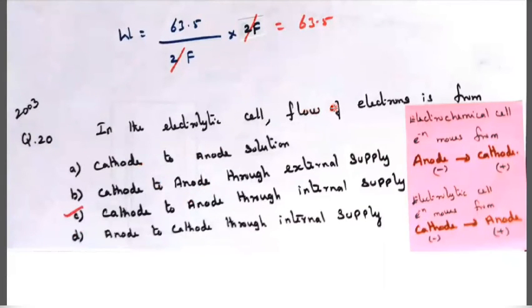2003 question 20. In the electrolytic cell, the flow of electrons is from cathode to anode or from cathode to anode solution - four different options given. Key points: electrochemical cell and electrolytic cell. In electrochemical cell, electron moves from anode to cathode - anode minus, cathode positive. But in electrolytic cell, electron moves from cathode to anode. Cathode is minus, anode is plus. This is the difference.